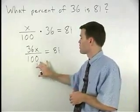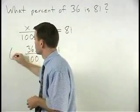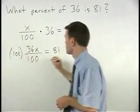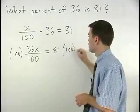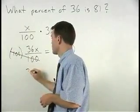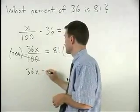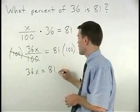To get rid of the fraction, we multiply both sides by 100, and we have 36x equals 8100.